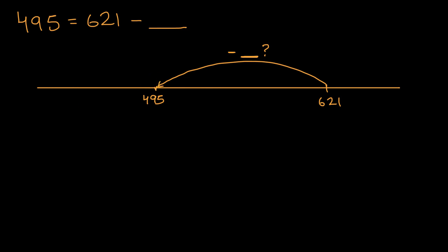Well, one way that my brain does it, first we can subtract 21 to get to 600. So let me do minus 21 would get us to 600. Then we could subtract another 100 to get to 500. So minus 100 to get us to 500. And then to go from 500 to 495 we would subtract another 5.